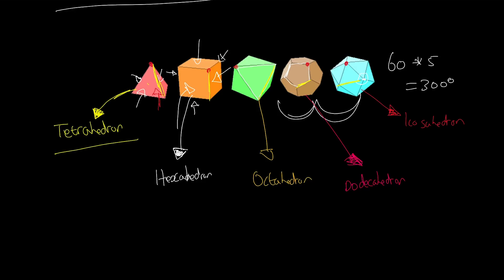The tetrahedron has 4 faces, 4 points, and 6 edges. The hexahedron has 6 faces, 8 points, and 12 edges. The octahedron has 8 faces, 6 points, and 12 edges. The icosahedron has 20 faces, 12 points, and 30 edges. And the dodecahedron has 12 faces, 20 points, and 30 edges.